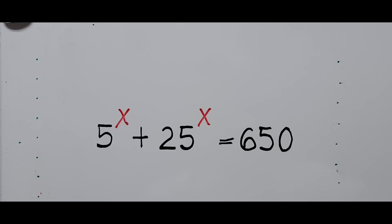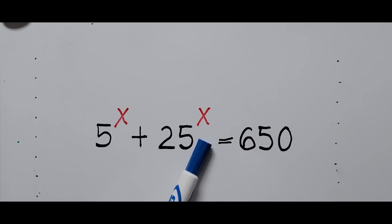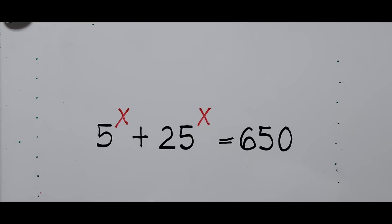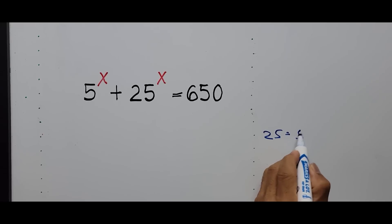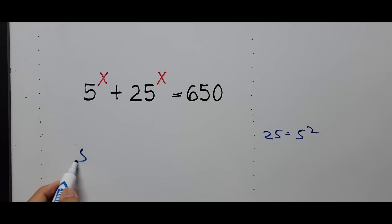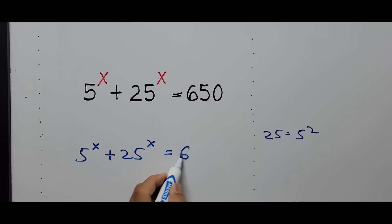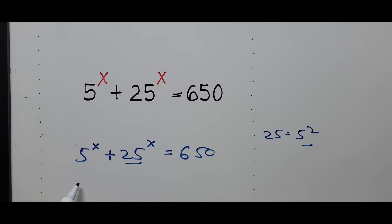Let's start solving. First, we focus on the second term, 25 raised to the x power. The base 25 can be rewritten as 5 squared. So we write the equation again: 5 raised to the power of x plus 25 to the power of x equals 650, and we substitute 25 with 5 squared, giving us 5 to the x plus (5 squared) to the x equals 650.